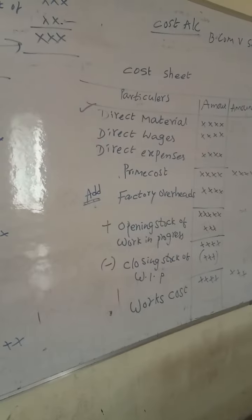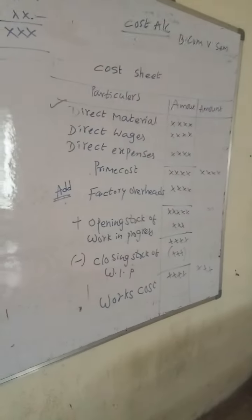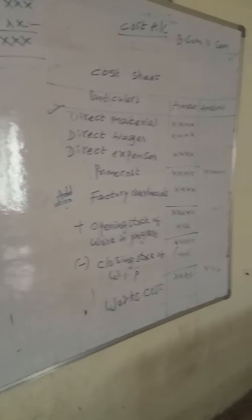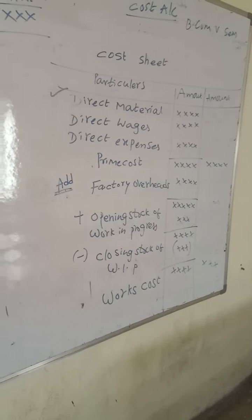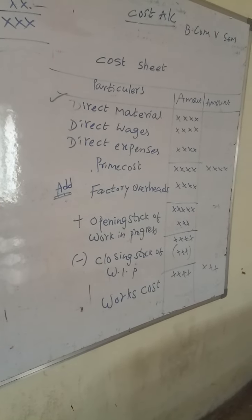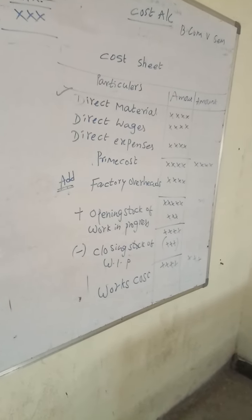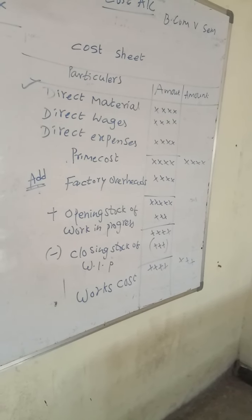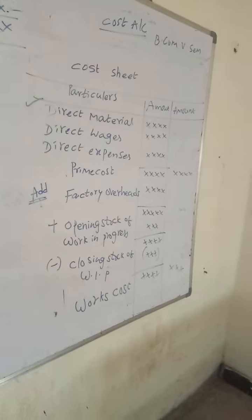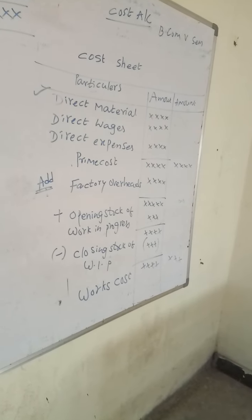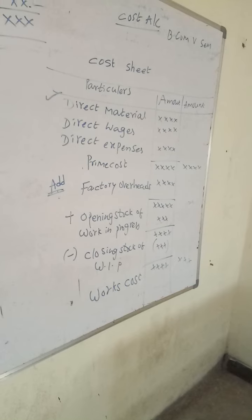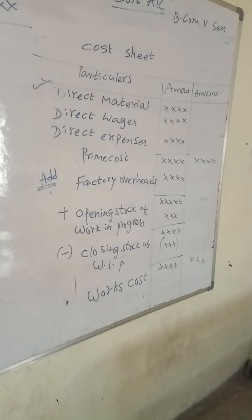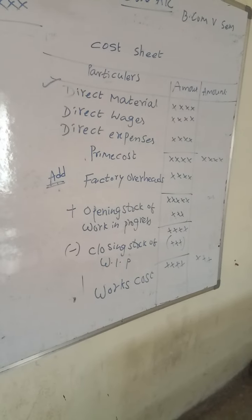Expenses are divided into three categories: factory expenses, office expenses, and selling and distribution expenses. Factory expenses include factory lighting and depreciation on machinery. Office expenses include director fees, office salaries, and rent. Selling and distribution expenses include advertising, discount allowed, bad debts, and distribution expenses.